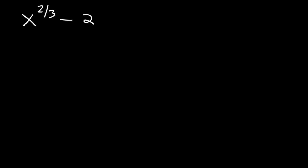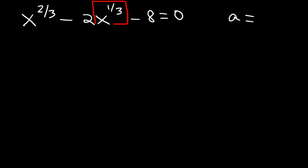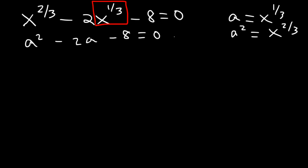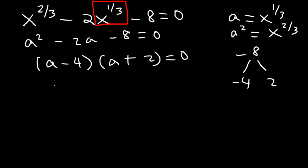Number 4: x to the 2 over 3 minus 2x to the 1 third minus 8. Let's set a equal to x to the 1 third, which means a squared is x to the 2 thirds. So this is a squared minus 2a minus 8. Two numbers that multiply to negative 8 but add to negative 2 are negative 4 and positive 2, so the factors are a minus 4 times a plus 2, giving a equal to 4 and a equal to negative 2.